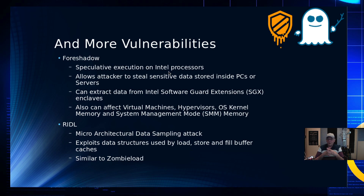Since 2018, we've just had one after another after another. We had Foreshadow, which again was speculative execution. Then we had Riddle, which affected the microarchitectural data sampling, or MDS. That allowed us to extract data from systems as they were running — pull it out of the cache, or pull it out of the SGX, which is the software guard extensions. That is supposed to be Intel's security enclave for protecting things like encryption keys, and that would be the root of trust in an Intel processor. So if you're able to extract data from your root of trust, you've got a serious security problem.